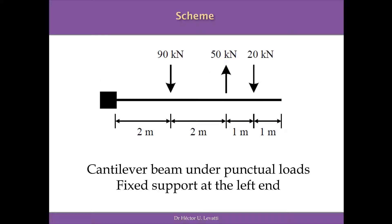In the first place, I'm going to present what is exactly the problem. The problem is a cantilever beam with a fixed support at the left end of the beam, and it's subjected to three different punctual loads: 19 kN at 2 m of the fixed support coming down, 50 kN at 4 m from the left support, and 20 kN coming down as well, 5 m from the fixed support. So we have a combination of three different punctual loads.